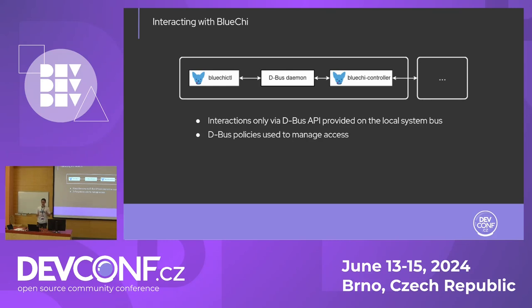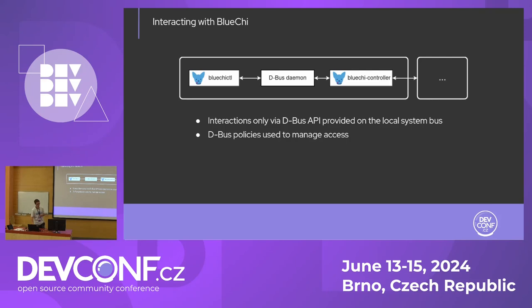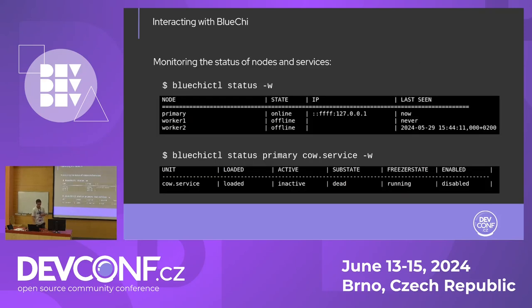All communication or interaction with BlueG has to go through the D-Bus API, especially the local system bus. This means we can manage access with D-Bus policies, allowing local users to access this API or denying it. By default, only the root user can access the BlueG D-Bus API.